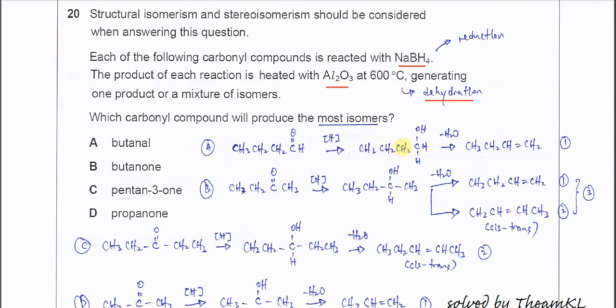And this butan-1-ol, after it dehydrates, so this OH will remove with this H to form but-1-ene. So this one, it cannot form cis-trans. That's why it's only one isomer.